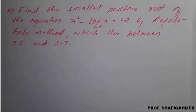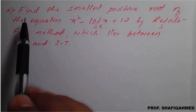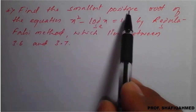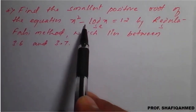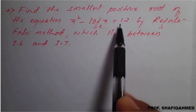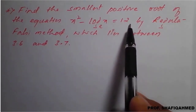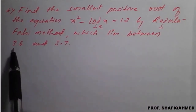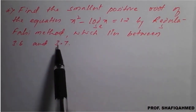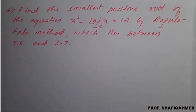Hello students. In today's lecture, we will see a problem based on the Regula Falsi method under numerical methods. The problem is: find the smallest positive root of the equation x² - log x to the base e = 12 by the Regula Falsi method, which lies between 3.6 and 3.7.